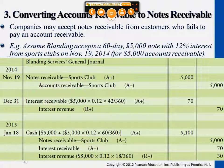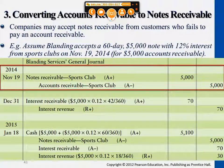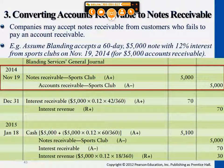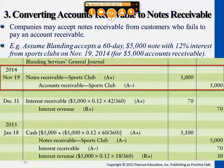So what these three entries are trying to do — in the first one here, we are reducing accounts receivable and converting it into a notes receivable, $5,000. This happens because earlier there was an outstanding accounts receivable of $5,000, and we're now switching it into notes receivable. That's what's happening in this first entry.